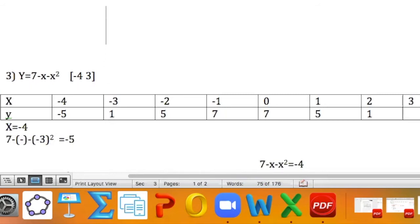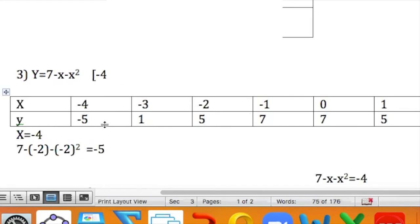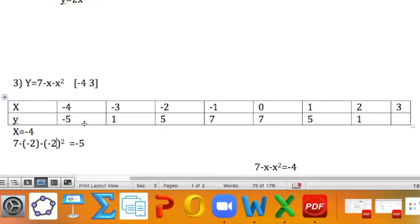Now, we'll do the same thing with negative 2, so substituting negative 2 on the range. Enter this into your calculator, you should be getting positive 5. You'll be continuing the same process with negative 1, 0, 1, 2, and 3.